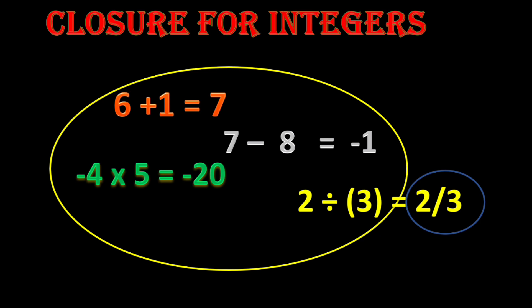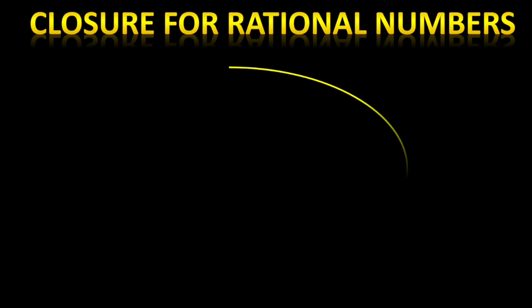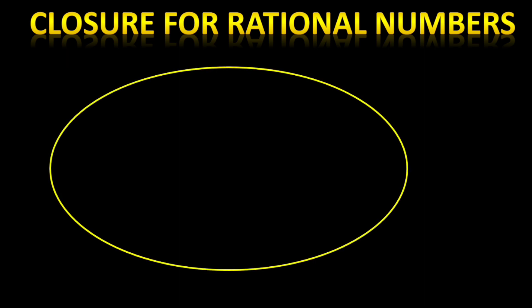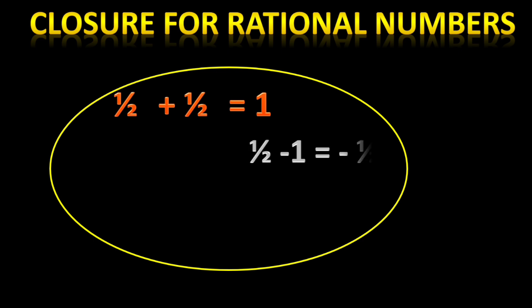Now let us check closure for rational numbers. This is the set of rational numbers. When we add any two rational numbers, we get a rational number. Whenever we subtract any two rational numbers, we always get a rational number. When we multiply also, we get a rational number.